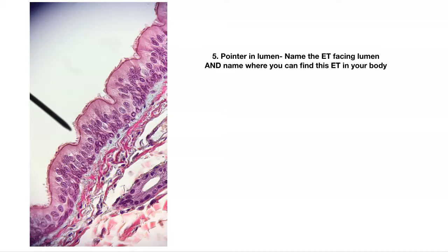Number five. Pointer in the lumen. Name the epithelial tissue facing the lumen, and tell me where you could find this type of epithelial tissue in your body.